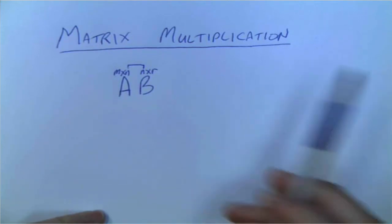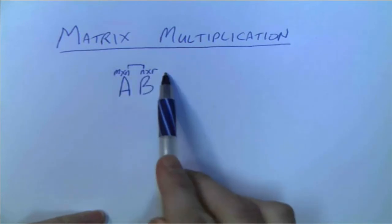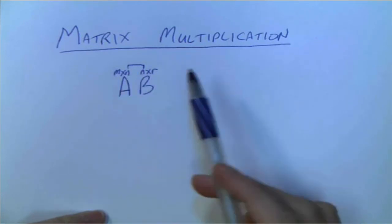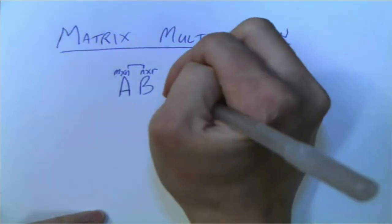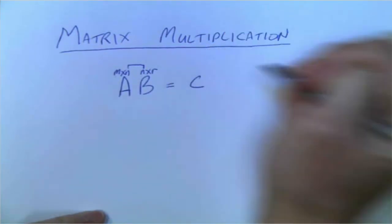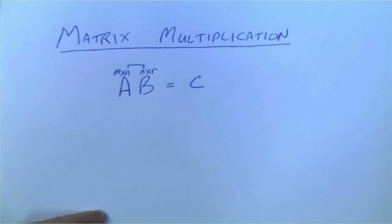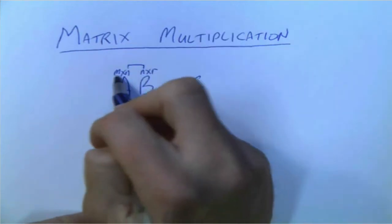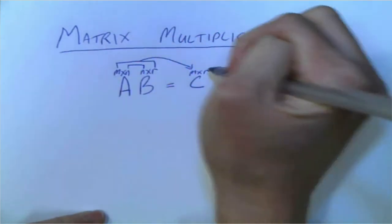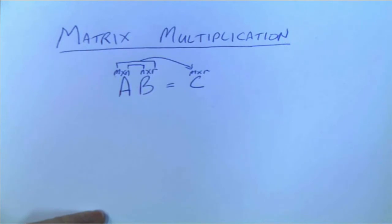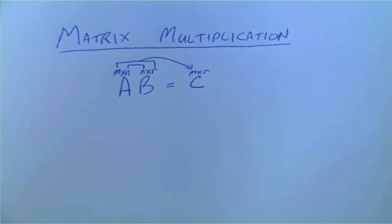What we're going to do at the very beginning is write out the order of each matrix right up top, and then determine if these two inside numbers are the same. If they are, then we can multiply them and we'll get a new matrix C, and it will have order M by R. So M by R is what the new dimensions of C will be. I think some examples will help us see what's going on.